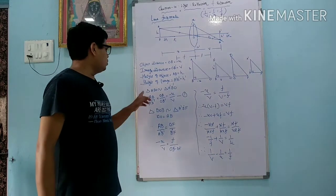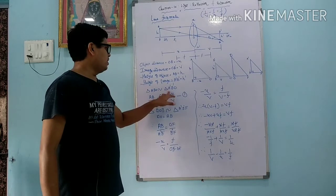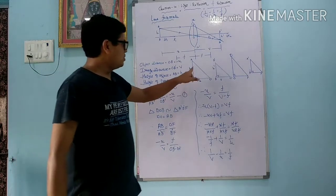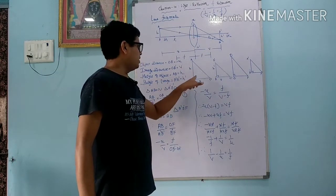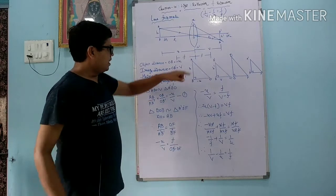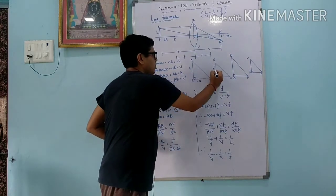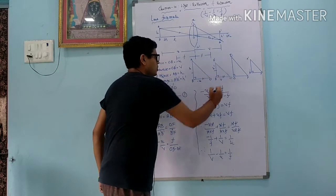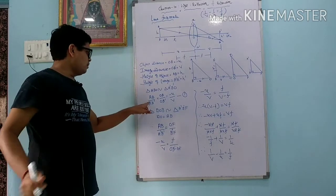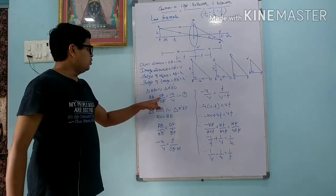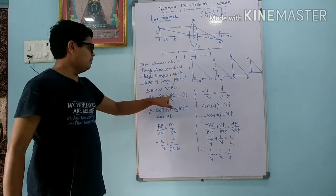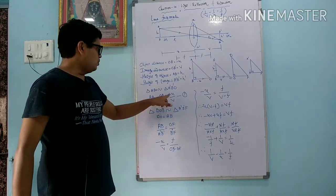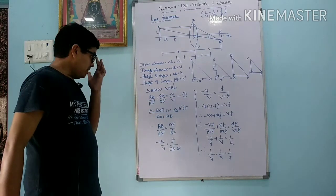There are two other triangles — triangle DOF and triangle A'B'F — which are also similar. Since DO equals AB, we can write AB/A'B' = OF/B'F. From result number one, AB/A'B' = −u/v. So −u/v = f / (B'F). Now, B'F = OB' − OF = v − f. Substituting, we get −u/v = f / (v − f). Doing cross multiplication: −u(v − f) = vf, so −uv + uf = vf. Dividing the whole equation by uvf, we get −1/f + 1/v = 1/u, which gives us 1/v − 1/u = 1/f. This is the lens formula.